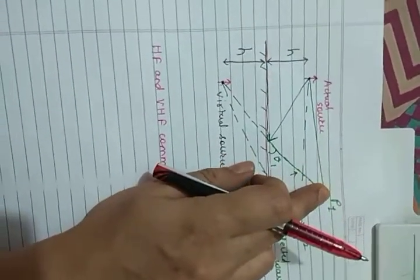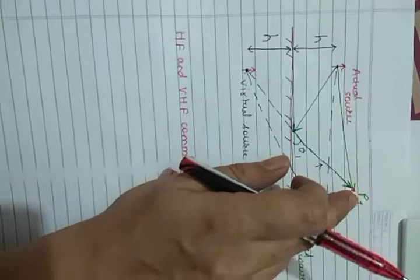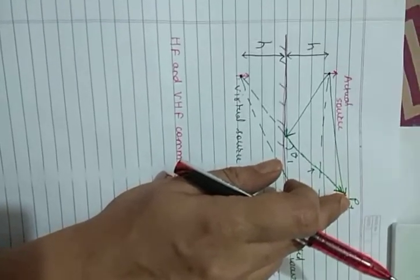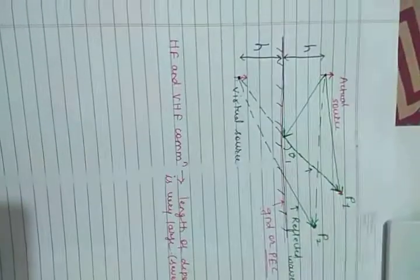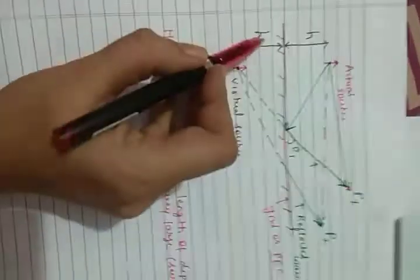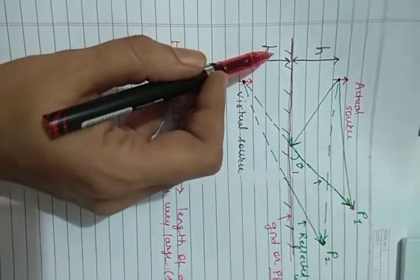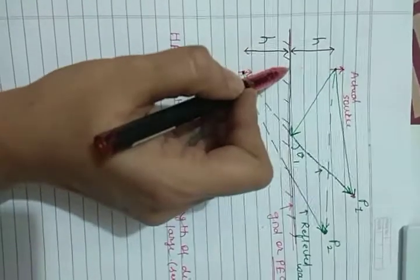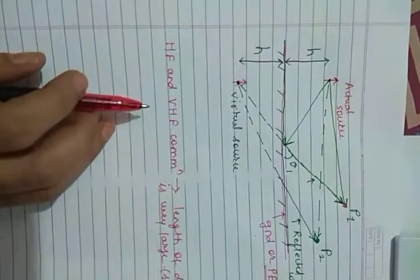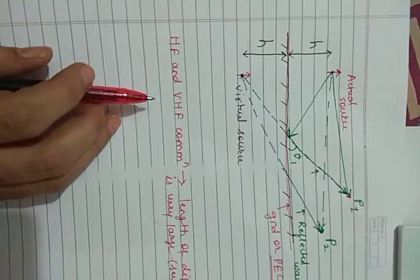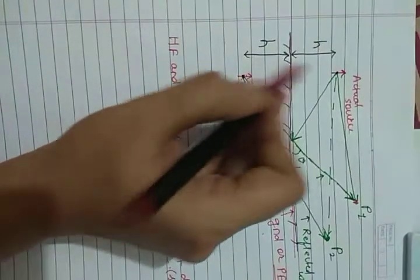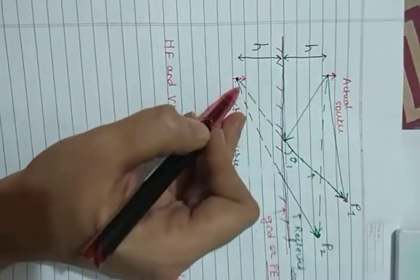In other words, it means that it is possible to virtually create a lambda by 2 dipole by placing a lambda by 4 length wire or monopole vertically above an infinite ground plane. And this theory is called image theory.